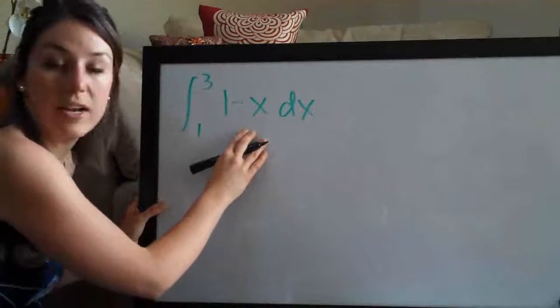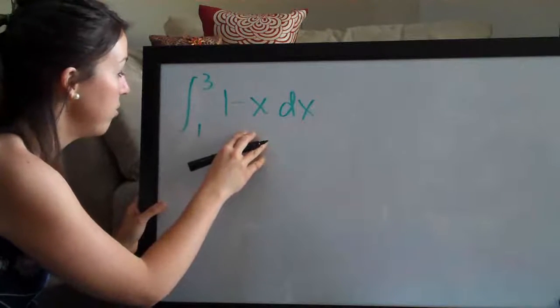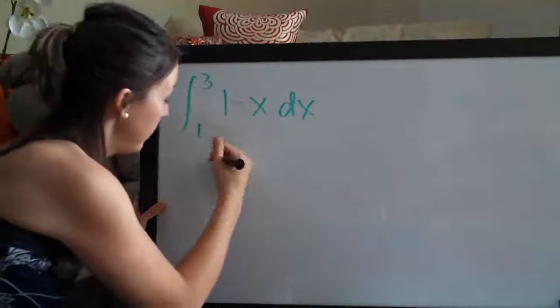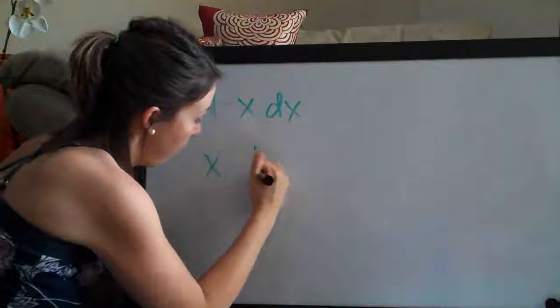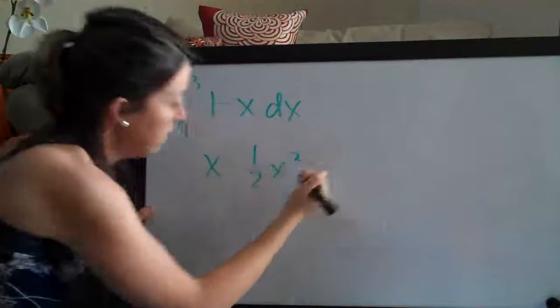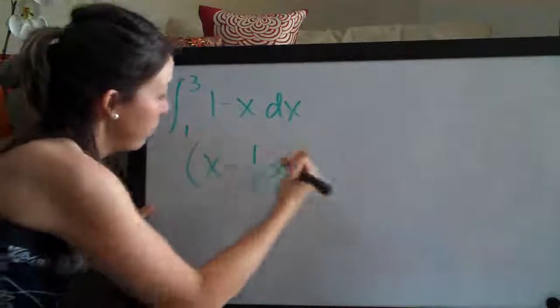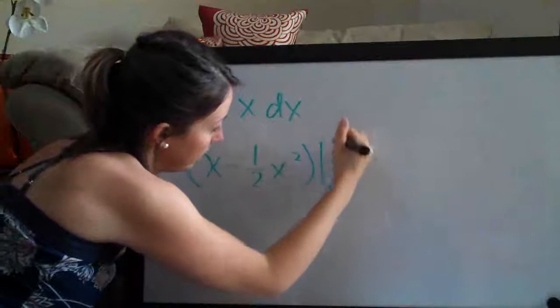So the first thing that we do with any definite integral problem is take the integral. The integral of 1 is x, and then the integral of x is 1 half x squared. And then we evaluate on the range 1 to 3.